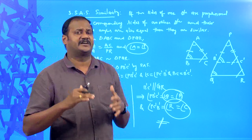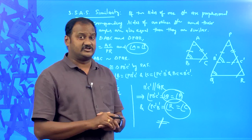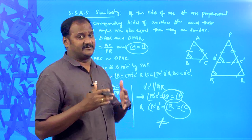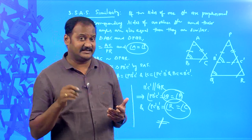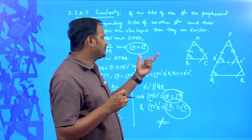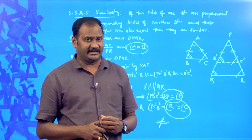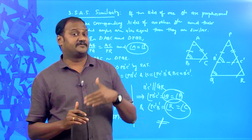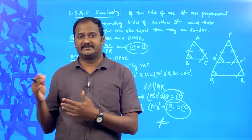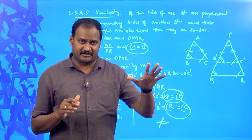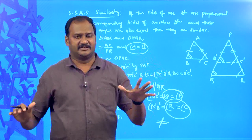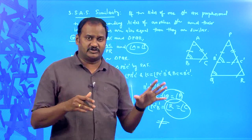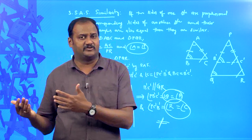The Basic Proportionality Theorem — also called Thales' theorem — is a very fundamental theorem in plane geometry related to triangles. Everyone must remember it as well as its converse. To summarize: two triangles are said to be similar if their corresponding angles are equal or their corresponding sides are proportional. If one condition holds, the other automatically holds good as well.